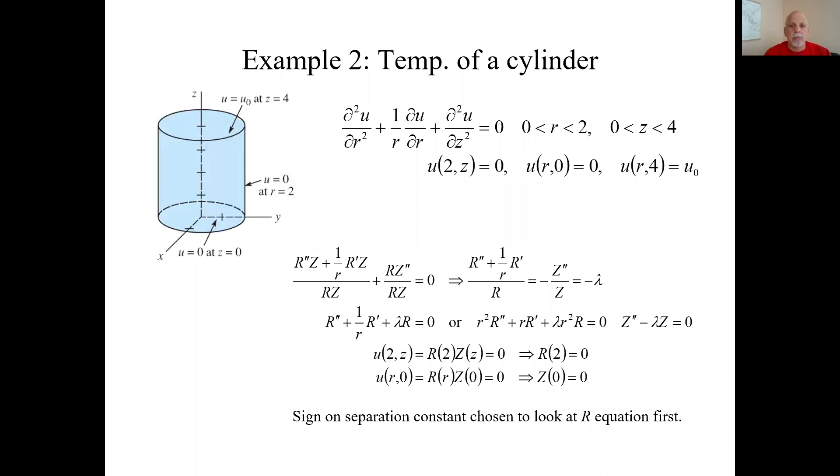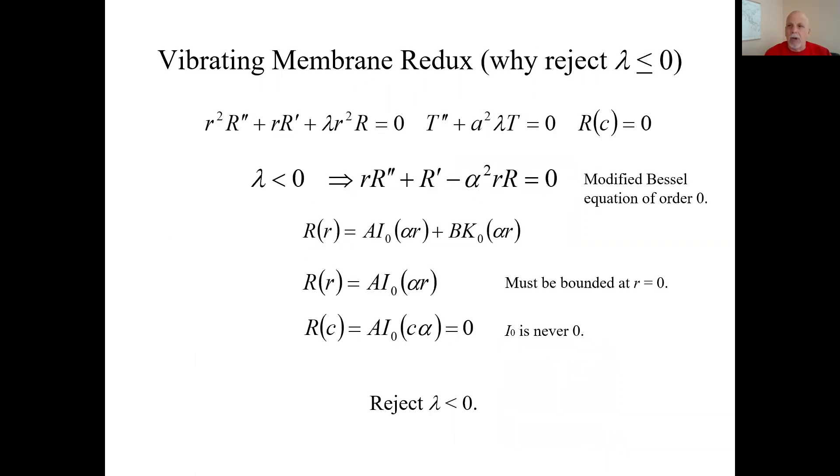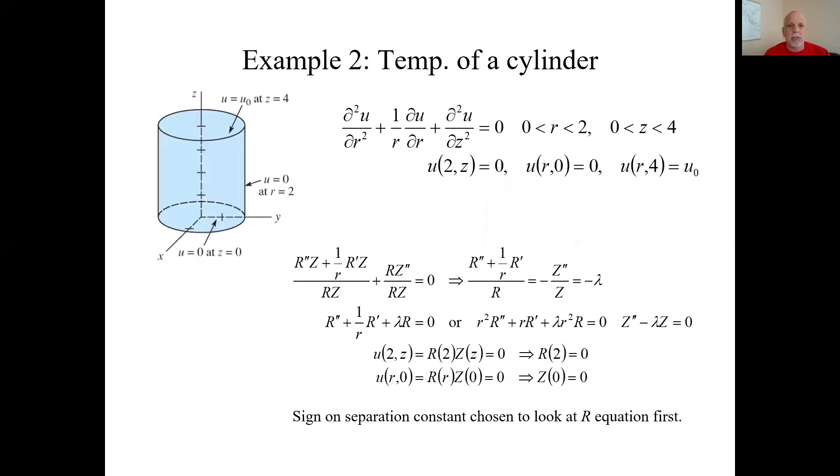So let's do another example. We already did that with the vibrating membrane. And that's how we could reject the negative or the non-positive eigenvalues in that case. Let's do another example. Temperature in a cylinder, a heated cylinder, and it's the steady state temperature. The temperature U is the temperature as time goes to infinity for this situation.